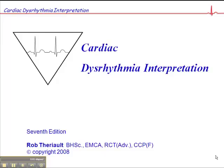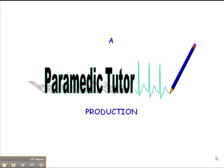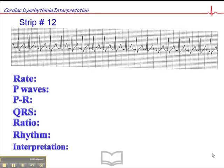We're on ECG exercise number 12 on page 90 of your cardiac disease interpretation workbook. At a glance, this looks like a tachycardia — a pretty fast heart rate. This is an adult, and as mentioned earlier, you can assume that all the ECGs in your exercise book are from adult patients unless stated otherwise.